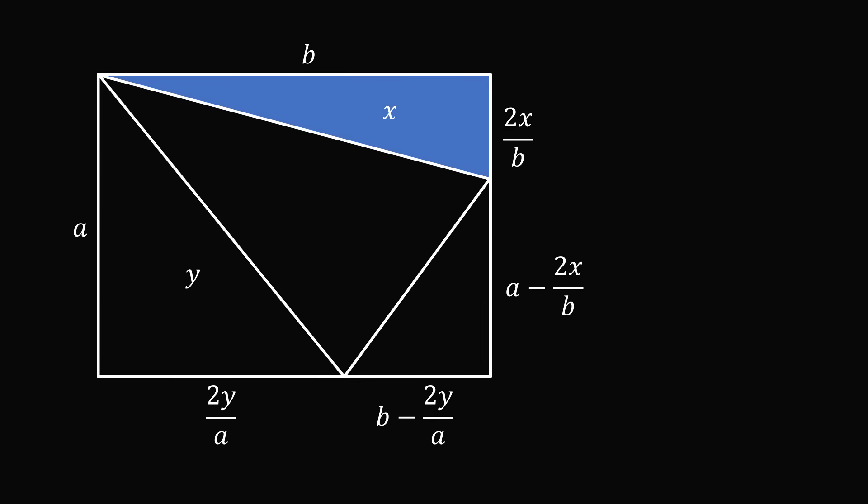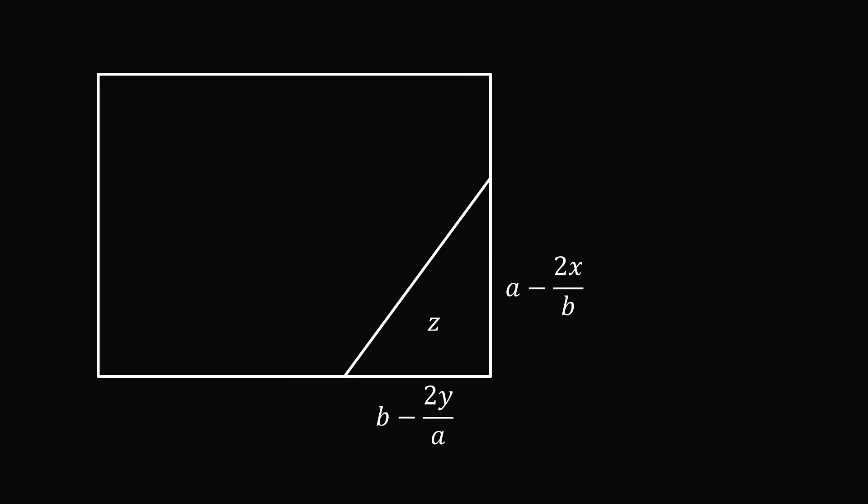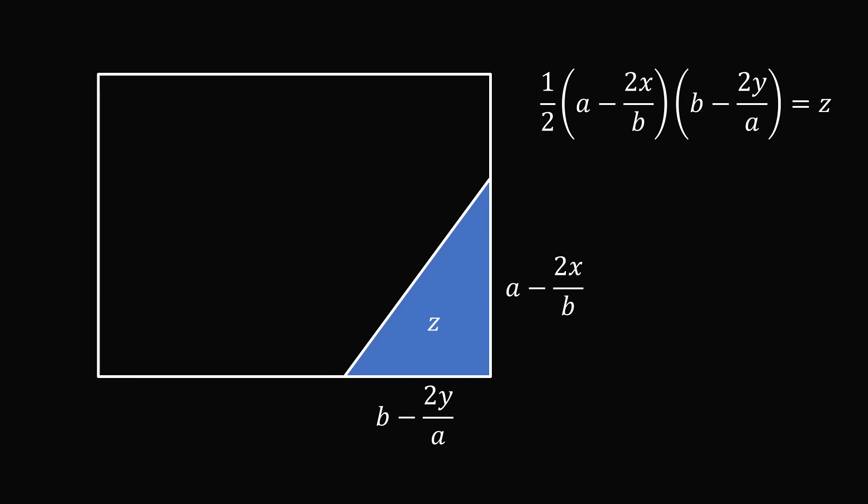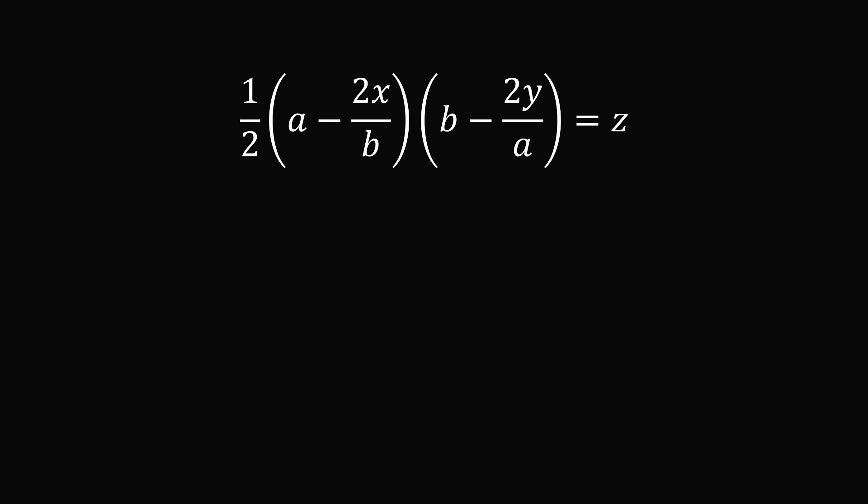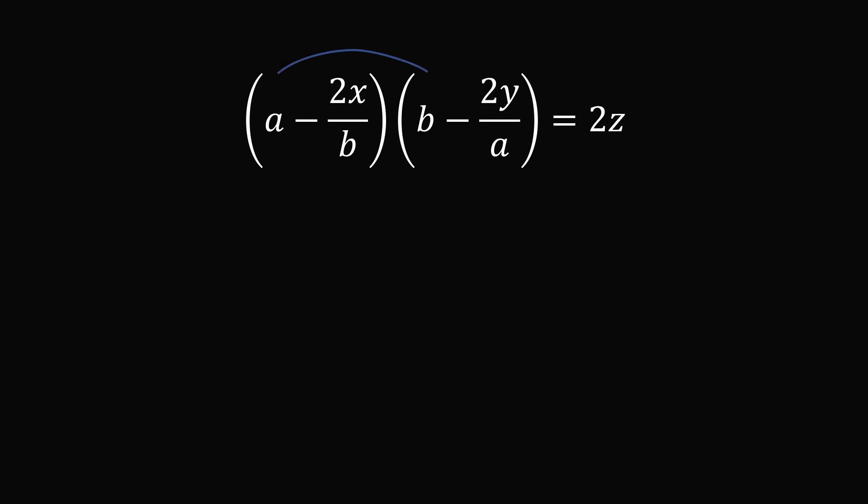So finally, we have one more triangle, and we know that this triangle's area is equal to Z. So let's focus on this triangle. We know that one half the product of its legs will be equal to Z, so we end up with this equation. Let us focus on this equation and simplify it. The first thing we will do is multiply both sides of the equation by 2. Let us now expand the binomial. The product of the first two terms is AB. The product of the inner terms will be minus 2X. The product of the outer terms will be minus 2Y. And the product of the last terms will be plus 4XY divided by AB. This is all equal to 2Z.